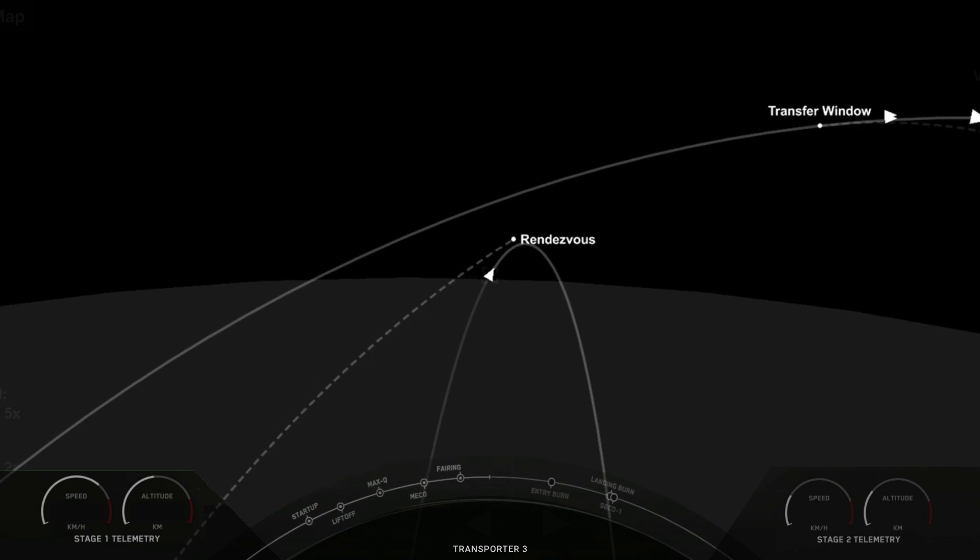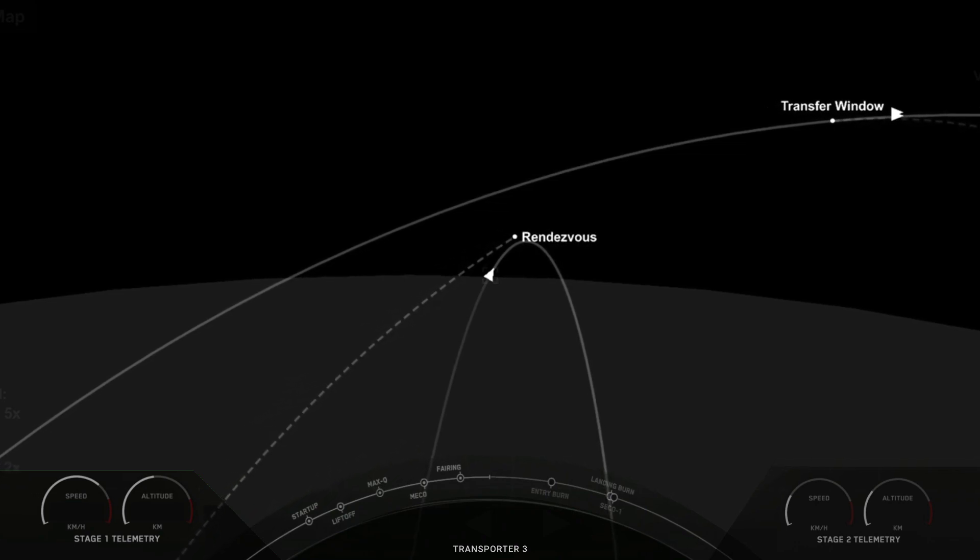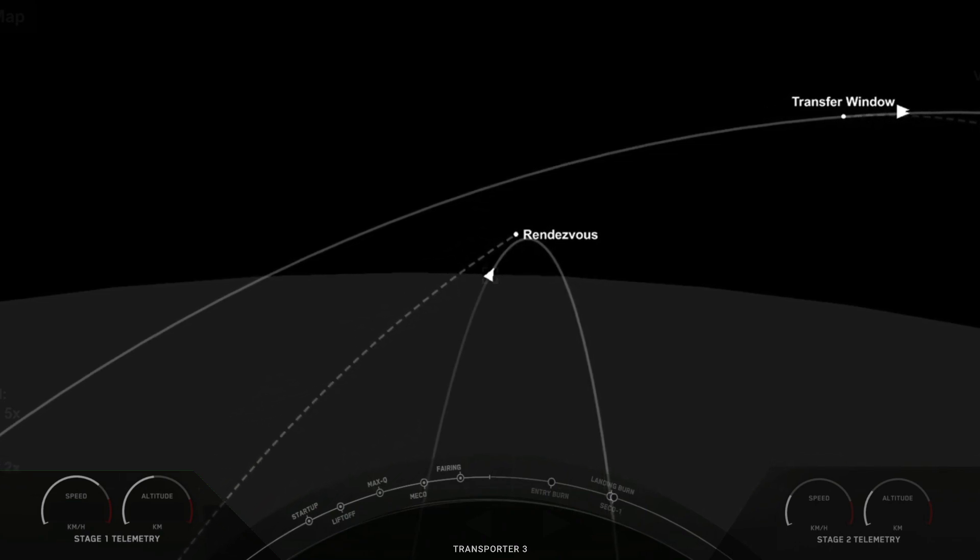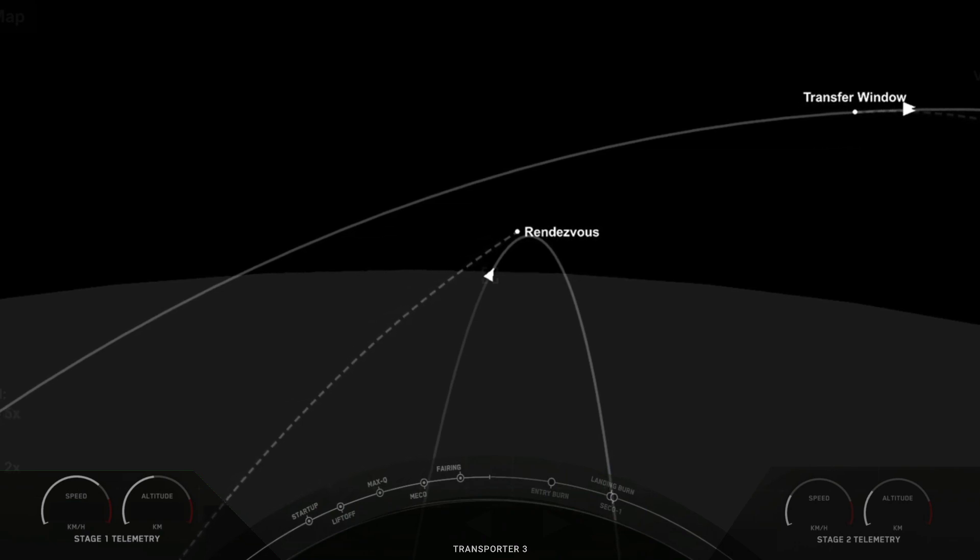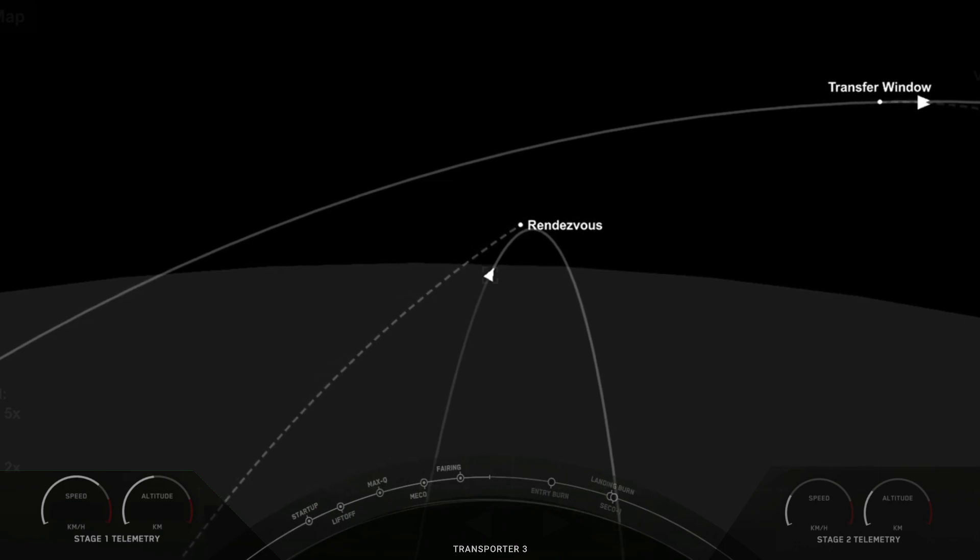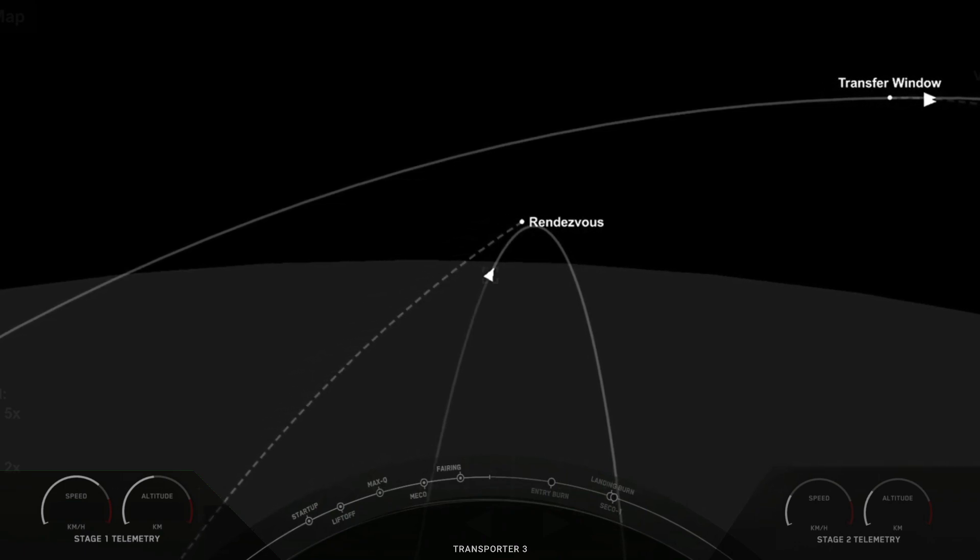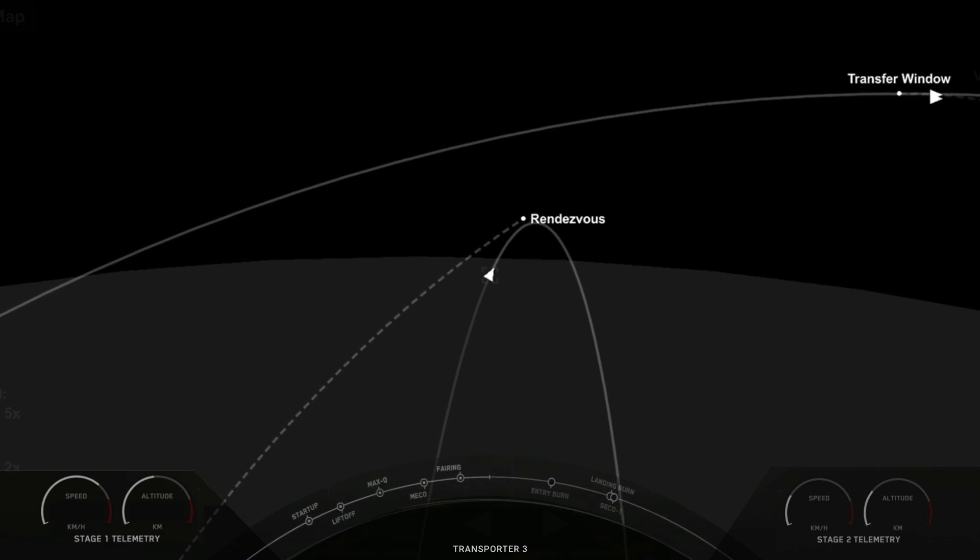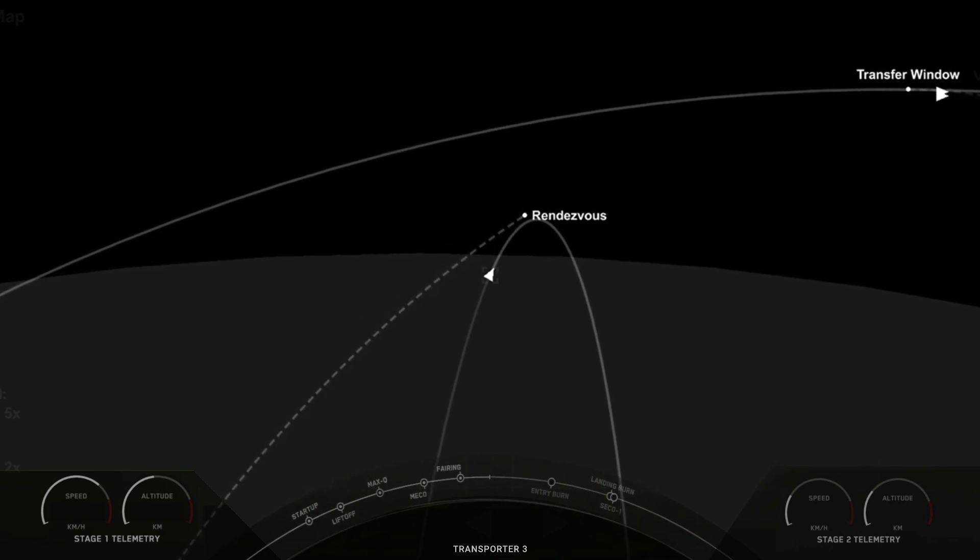And there we can see the east coast of Florida on the nominal trajectory, Space Coast there in the background on the left hand side. Once again, we are launching the Transporter 3 mission today. This is SpaceX's third dedicated small sat rideshare program mission and it's our second mission of 2022.